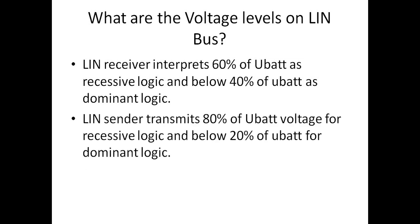At the sender side, the LIN transmitter sends above 80% of U-BAT voltage for a recessive logic and transmits below 20% of U-BAT for a dominant logic. So these are the two different voltage levels at the receiver side as well as the transmitter side.